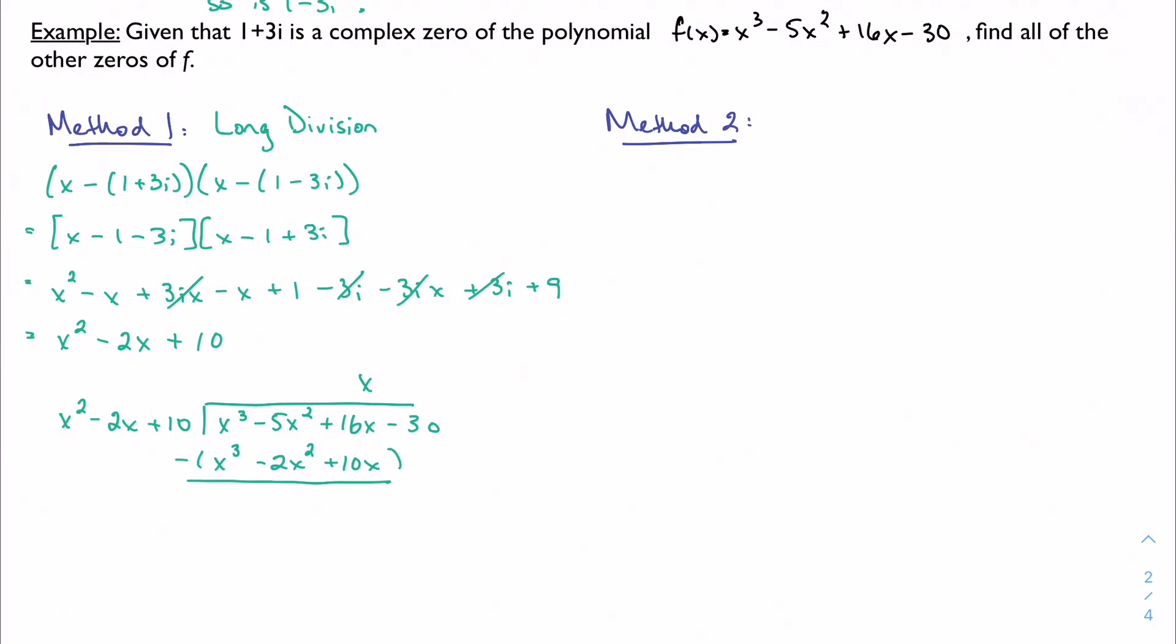Let's subtract, so I'm going to get negative 3x squared, plus 6x. I'm going to bring down the 30.